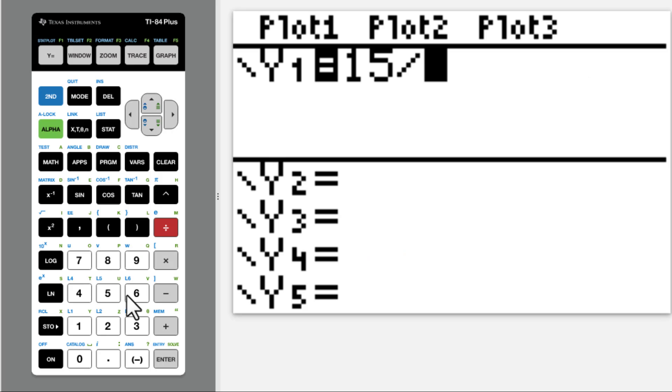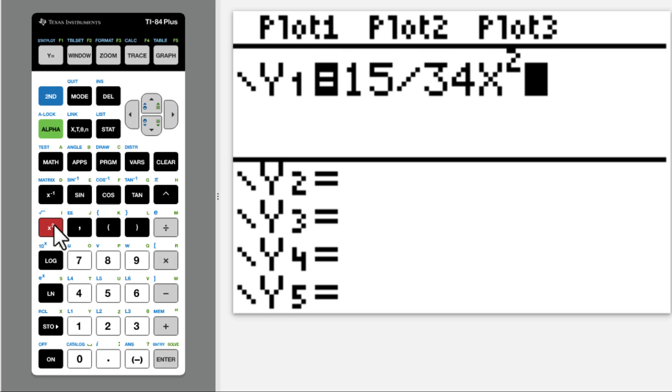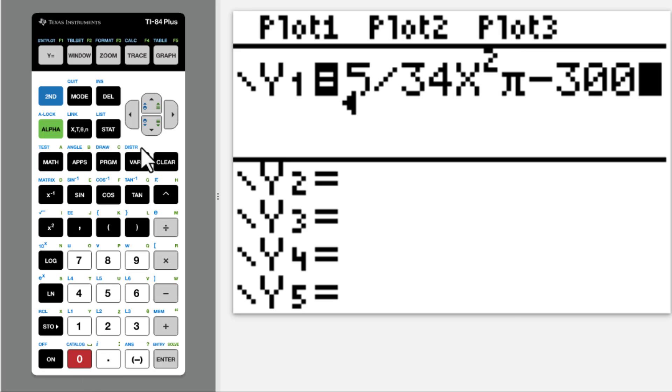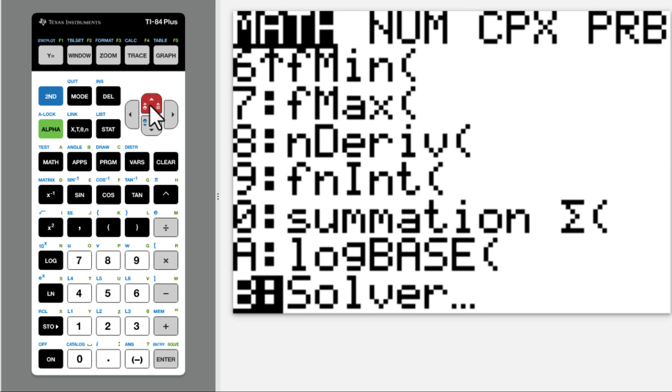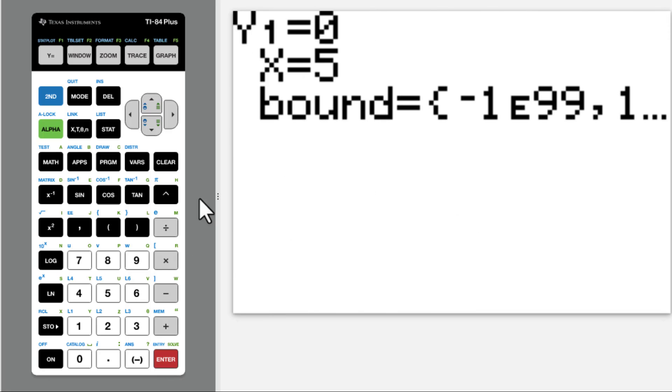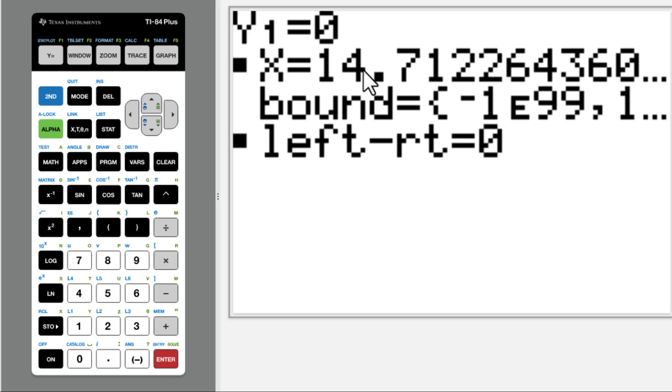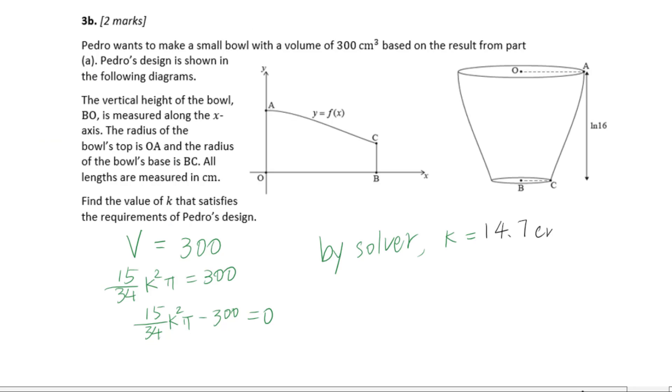By solver, let's go to y1. 15 divided by 34, x squared pi minus 300. Quit math equation solver. For this k, it's positive. Let's estimate as 5. Alpha, enter. Answer is 14.7, so k equals 14.7 centimeters.